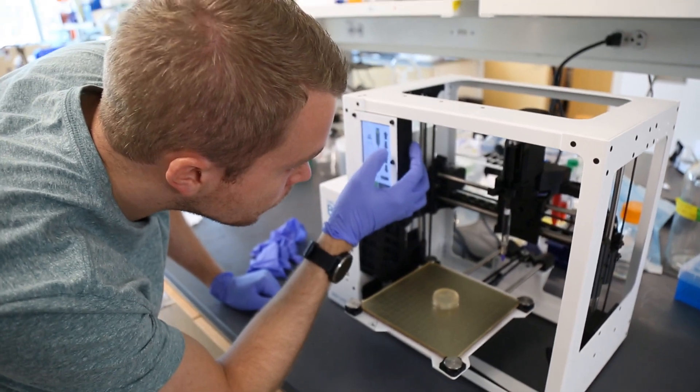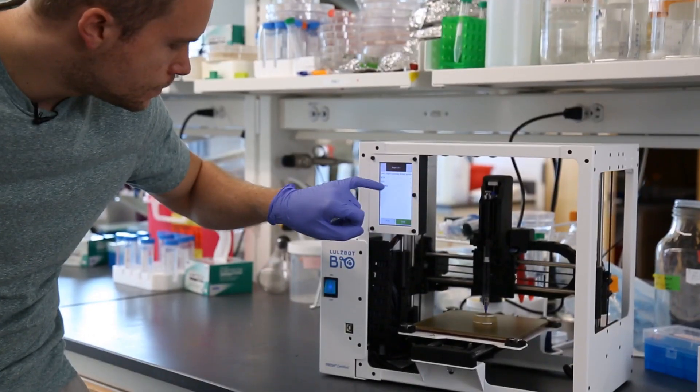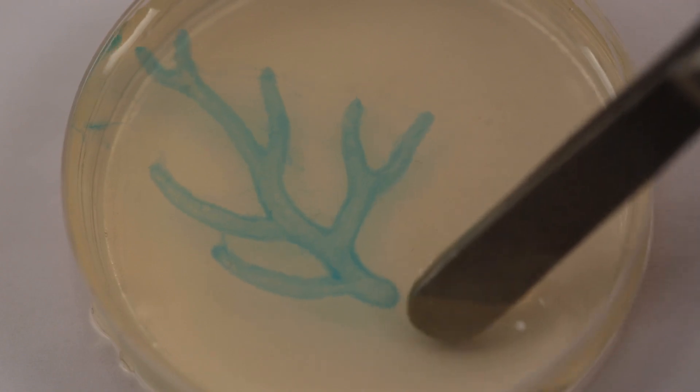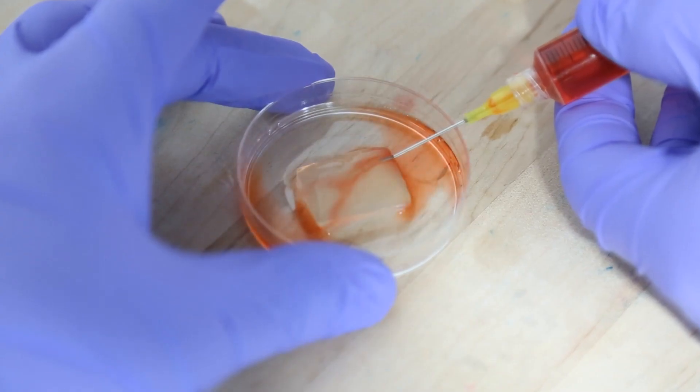We can just print collagen and other materials directly which enables people to start going to the next level of bioprinting where we're starting to make functional tissues. Things like artery trees, we can 3D print these basic tube networks that can help keep cells alive.